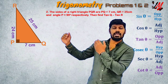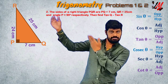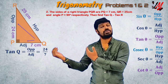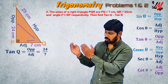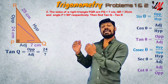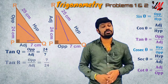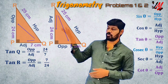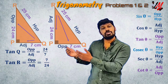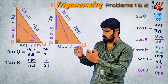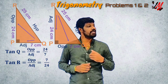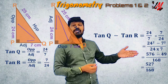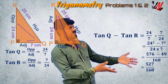Now we have tan Q. For angle Q, the opposite side is 24 and the adjacent side is 7, so tan Q equals 24 by 7. For angle R, the opposite side is 7 and the adjacent side is 24, so tan R equals 7 by 24. Therefore, tan Q minus tan R equals 24 by 7 minus 7 by 24.